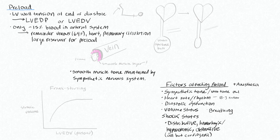Preload is highly dependent on the return of venous blood to your heart. To put this into perspective, only about 15 percent of your blood is in your arterial system at any given point in time, but about 64 percent of the blood is in the venous system. That means your venous system is acting as a very large reservoir for blood.